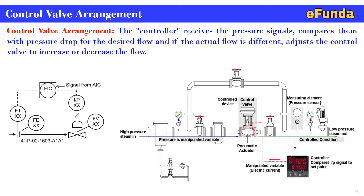Pressure gauges are provided for measurement. A bypass control valve flow path is also shown. Typically at the discharge of the control valve section, the measuring element — that is, the pressure sensor — is shown, where pressure will be indicated on the controller. Based on the manipulated variable, that is electric current, the signal is sent to the control valve so as to take the control action to increase or decrease the flow as required.